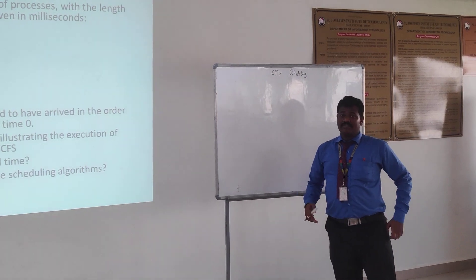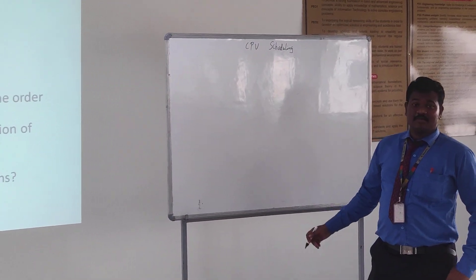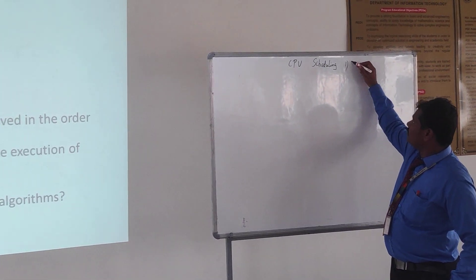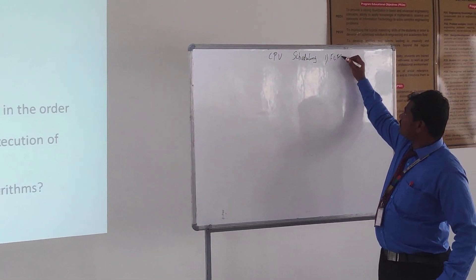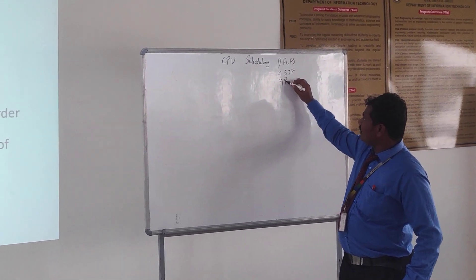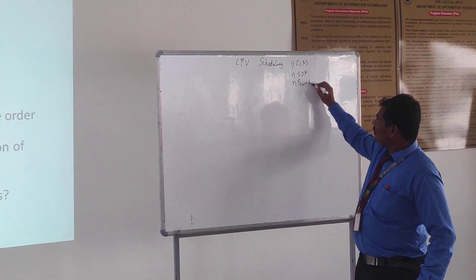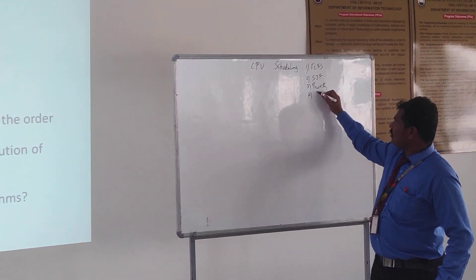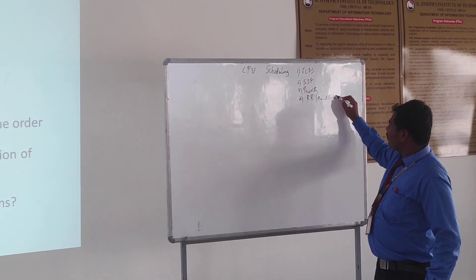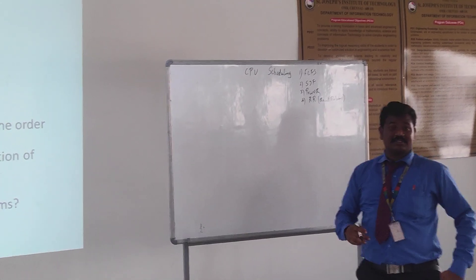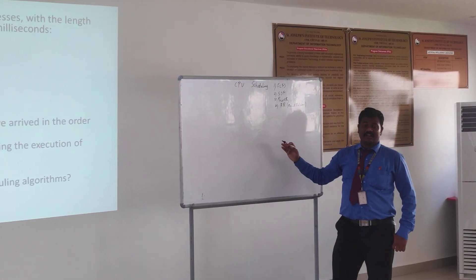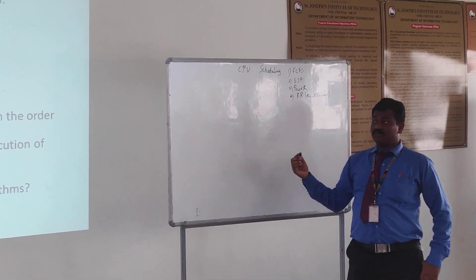Good evening everyone. Today we are going to see about CPU scheduling. There are various types of CPU scheduling. The first one is FCFS, the second one is SJF, the third one is Priority, and the fourth one is Round Robin. In this video we are going to see how the CPU scheduling works and solve a problem related to CPU scheduling.